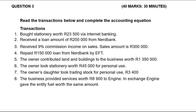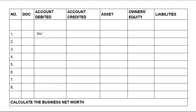In question three we need to read the transactions and complete the accounting equations. Transaction one says we bought stationery — that's one account affected. Stationery is an expense, so we have more stationery and we are going to debit stationery. The other account affected is bank, because we bought it via internet banking. Bank will be decreasing, and because bank is an asset, it decreases on the credit side. We debit stationery and credit bank.